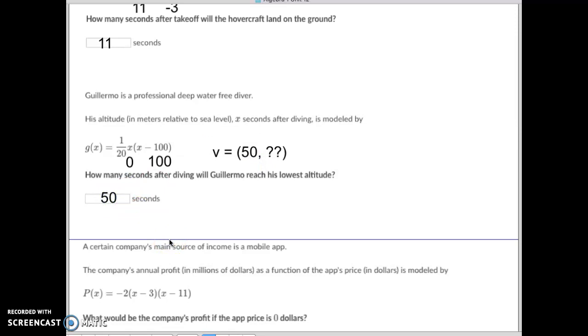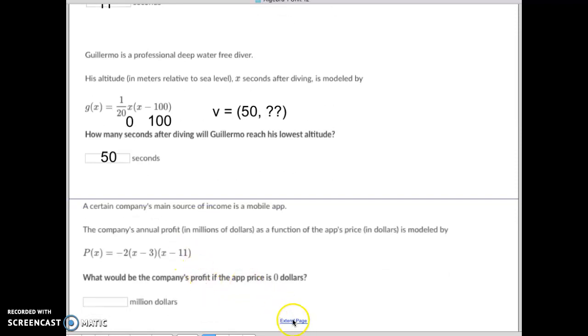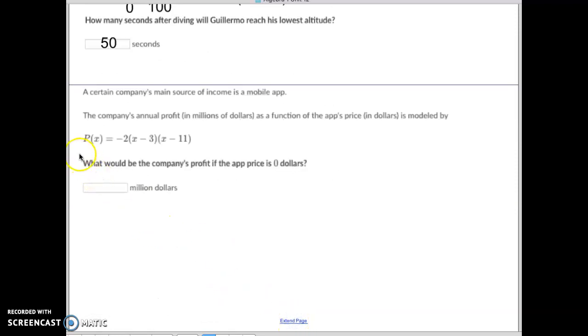It does not ask for what is the lowest altitude, just how many seconds until it reaches that. Now last one. Here's another one. Again, I'm going to the question part first: what would be the company's profit if the app is priced at zero dollars? So they want to know if x is zero, how much money are they making. So what we're going to do is take this equation, we are going to figure out a profit if x equals zero.